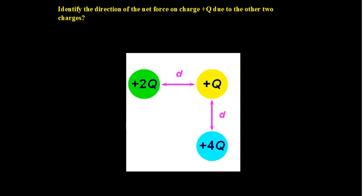The next example asks: identify the direction of the net force on the positive q charge (the yellow one) due to the other two charges. We don't have the exact distances numerically, but from the picture we can see the distance between the green charge and the yellow one equals the distance between the blue 4q charge and the yellow one.